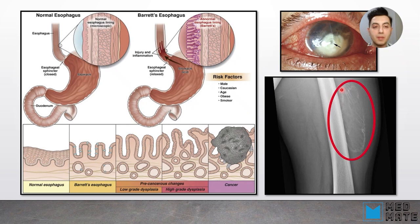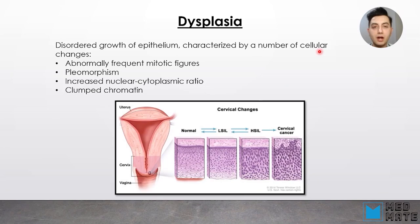There is a fine line between myositis ossificans and bone tissue — the bone is not giving rise to the metaplasia within the mesenchymal tissue of muscles. Also, keratinizing squamous epithelium of the eye or cornea occurs when there is vitamin A deficiency.